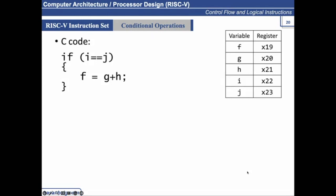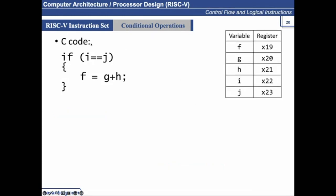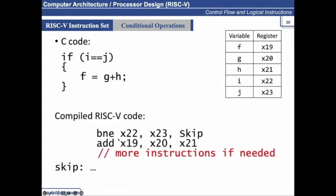Let's try converting this into RISC-V code. Assume that i, j, g, h, and f are stored in these registers. In order to check this condition, you should be writing BNE — branch if not equal. Since i and j are stored in x22 and x23, you write: BNE x22, x23. If they are not equal, jump to skip, meaning do not execute the next instruction.